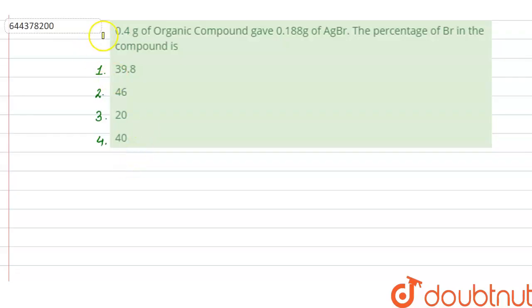Hello everyone, let us solve this question. The question says that 0.4 gram of organic compound gave 0.188 gram of AgBr. The percentage of bromine in the compound is - option 1: 39.8, option 2: 46, option 3: 20, and option 4: 40.